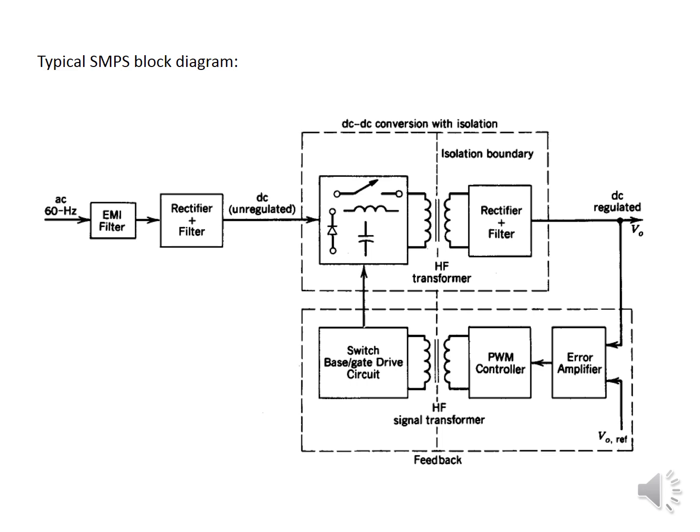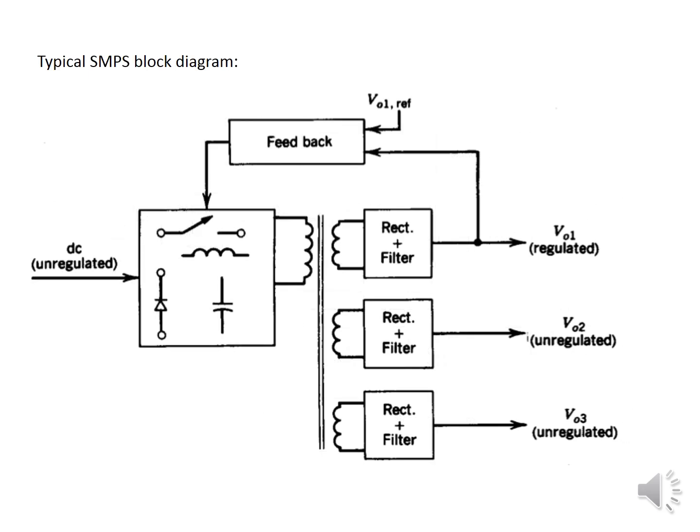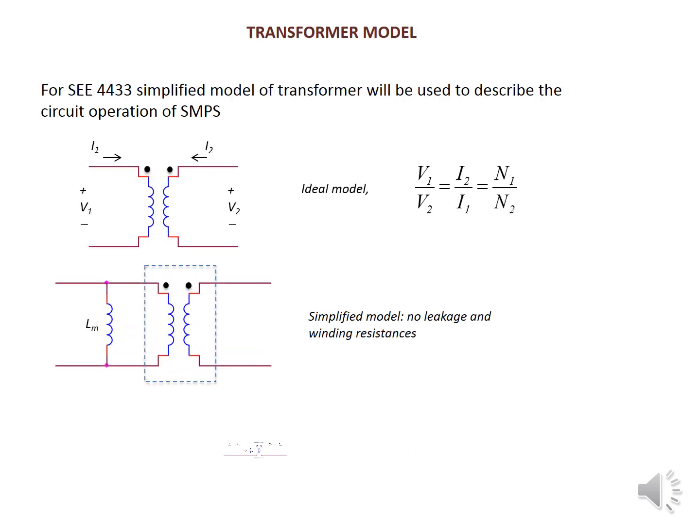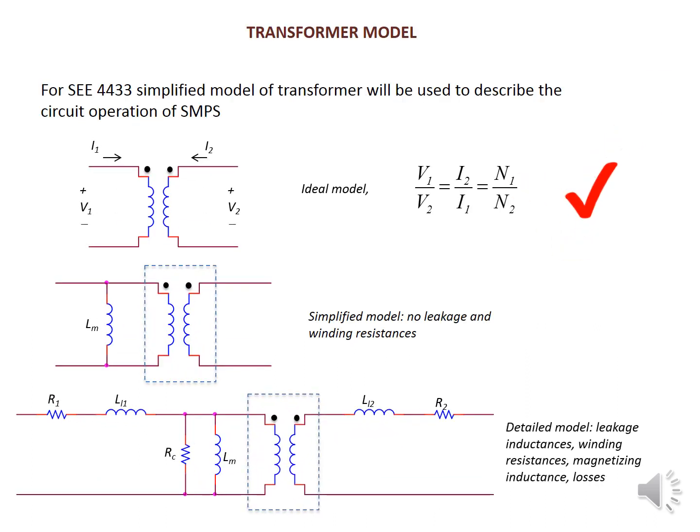The output is fed back as a regulated DC output. The transformer feedback is given to three stages: rectifier plus filter, regulator, and unregulated output. These three transformer outputs, along with the feedback, are given to the unregulated DC supply, where a conversion occurs in the DC-DC converter. This derivation part can be seen in the simplified model.